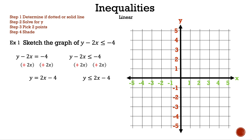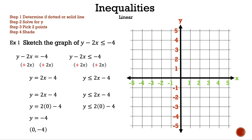Solving for y with equations and inequalities is very similar. Let's find two points so we can graph our line. Using zero as input: y equals 2 times 0 minus 4, and 2 times 0 is 0, and 0 minus 4 is negative 4. So the output is negative 4, and our point is (0, negative 4). The same applies with the inequality — our point is also (0, negative 4). That's the y-intercept, and that is our first point.